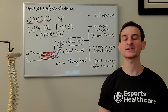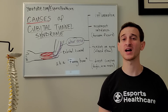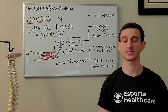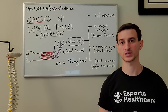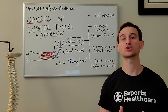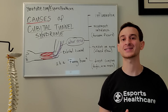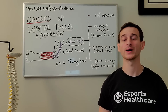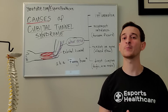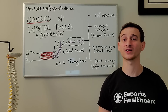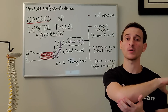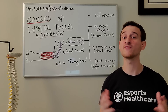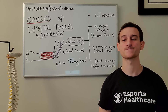Although this is not a true case of cubital tunnel syndrome, striking the backside of your elbow can cause temporary symptoms of ulnar nerve irritation. This is why the backside of your elbow is known as the funny bone.